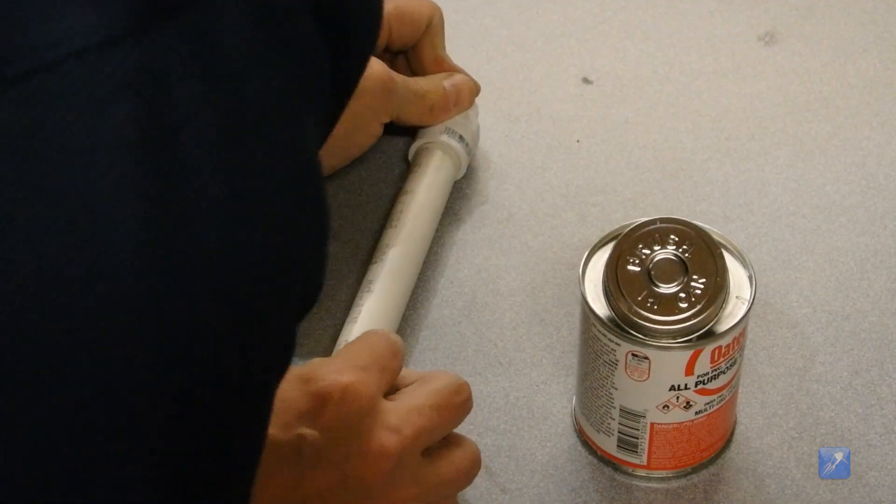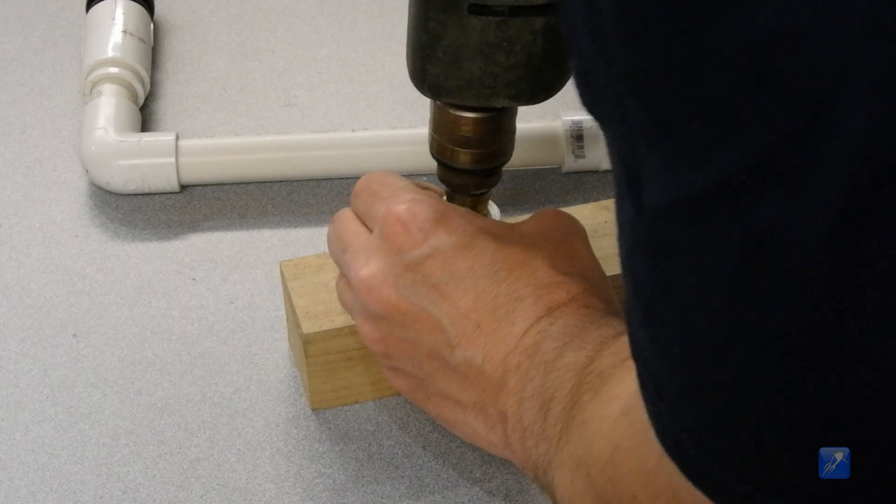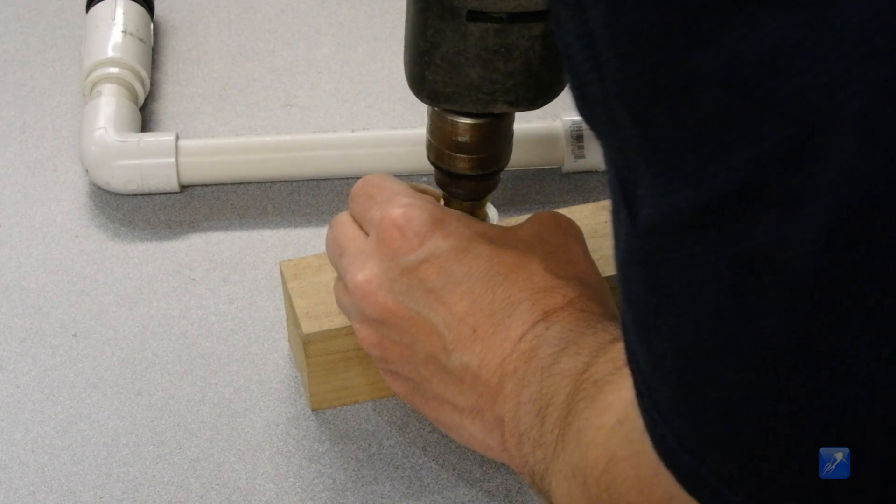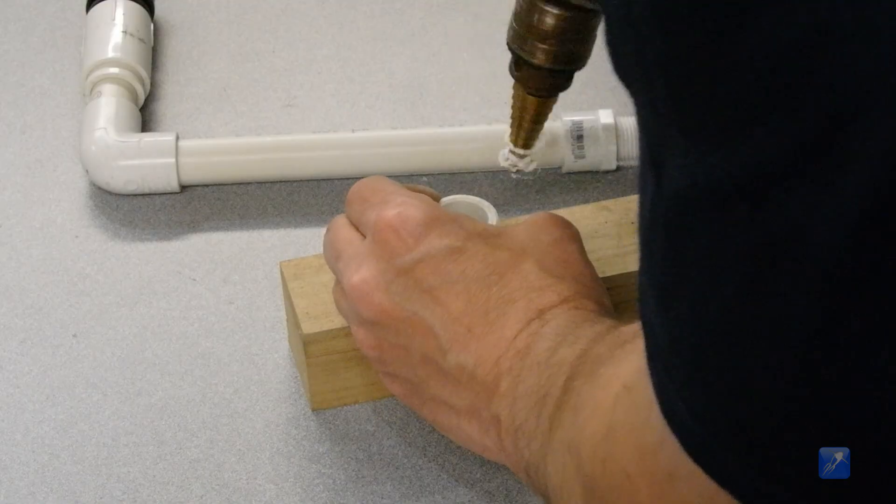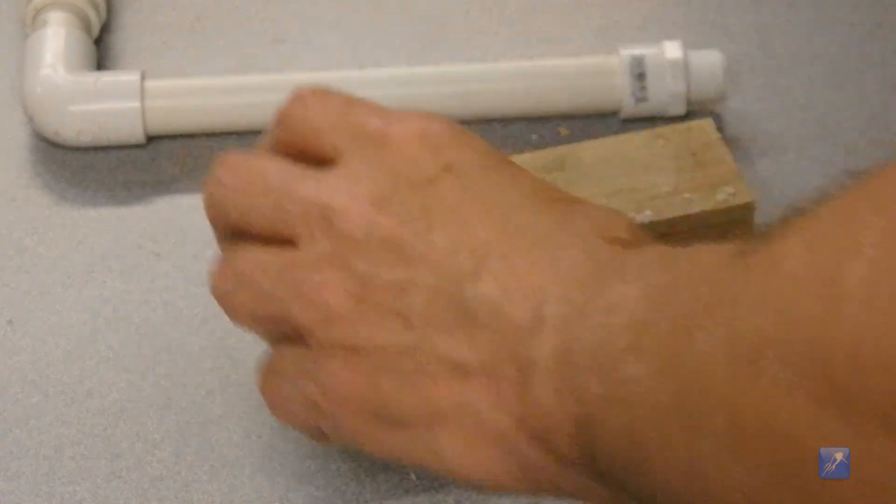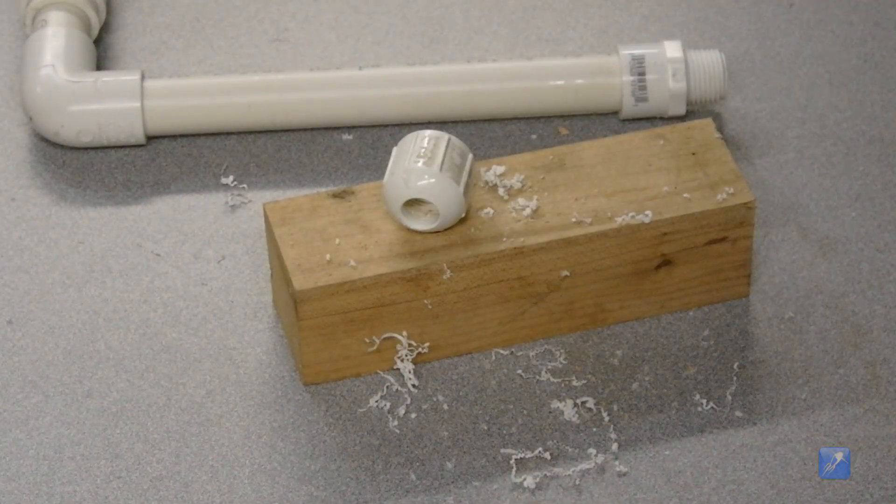Your next step is to mount the Schrader valve so that you have a place to connect the air supply to the launcher. Installing the Schrader valve is very easy. Take the ½ inch female threaded cap and drill an 8mm hole through the center of the end.